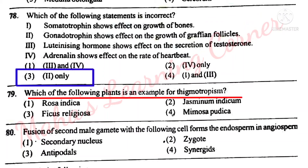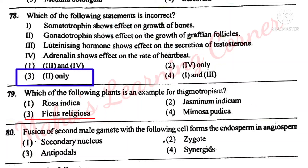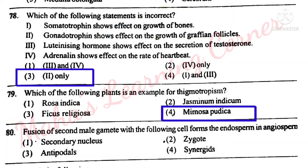Which of the following plants is an example for thigmotropism? Options: Rosa indica, Jasminum indica, Ficus religiosa, Mimosa pudica. Correct answer: Option 4 – Mimosa pudica. Response towards touch or contact is called thigmotropism. Mimosa pudica is a touch-me-not plant.